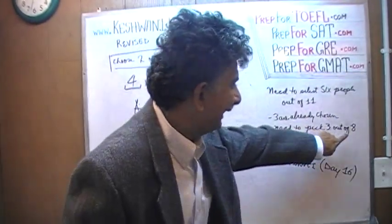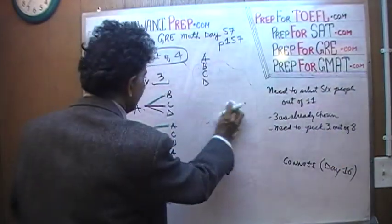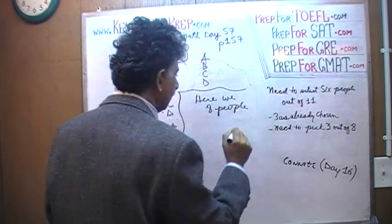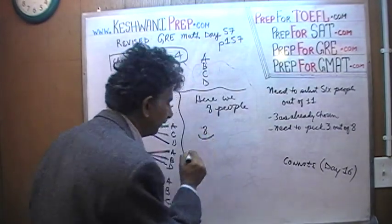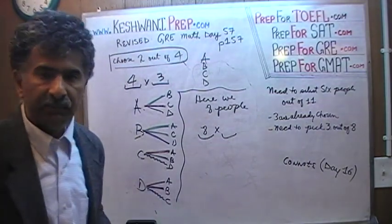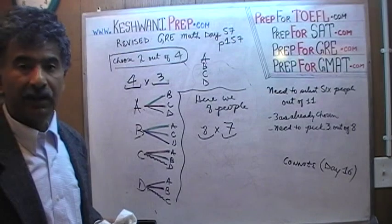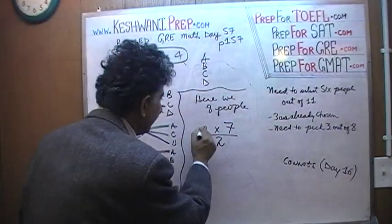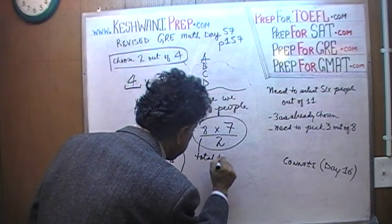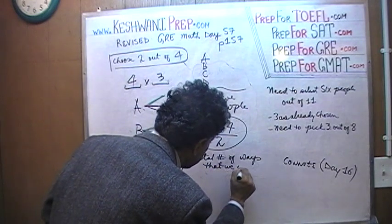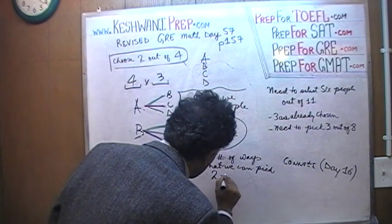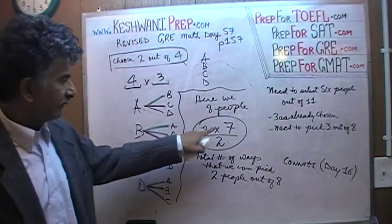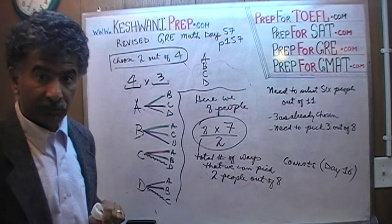Now we go on to what we have in our problem — 8 people. There are 8 different ways of picking the first person. Once I have chosen the first person, there are only 7 left, so there are 7 ways of picking a second person. Since everything is being double counted, the total number of ways to pick 2 people out of 8 is 8 times 7, divided by 2.